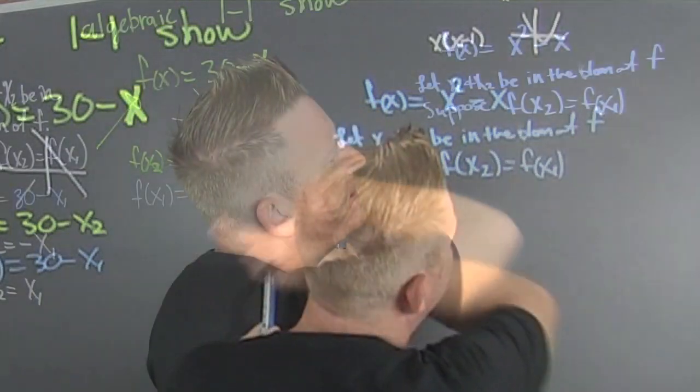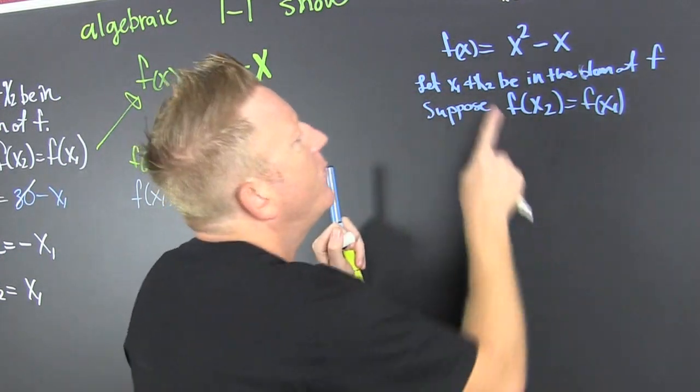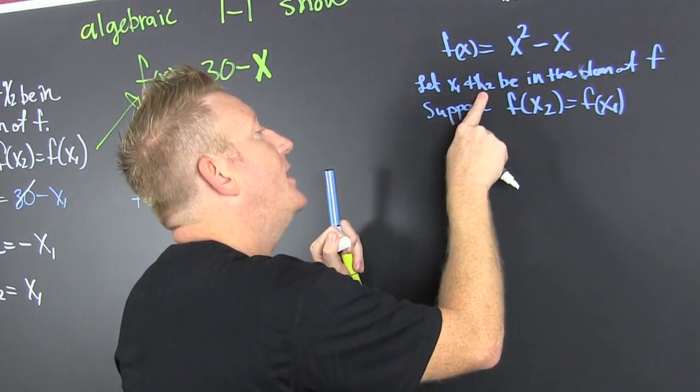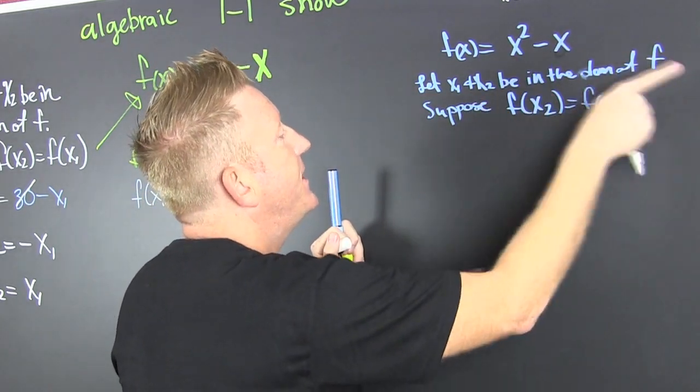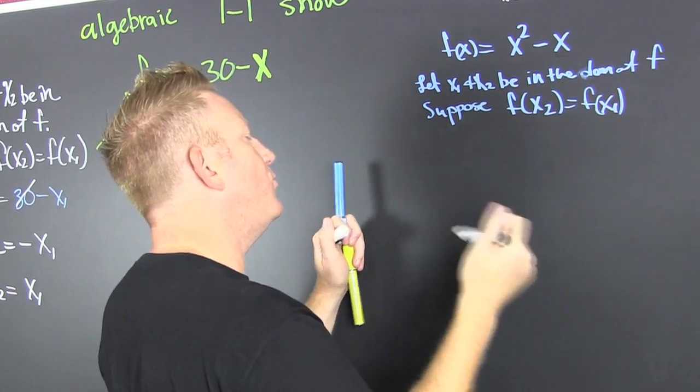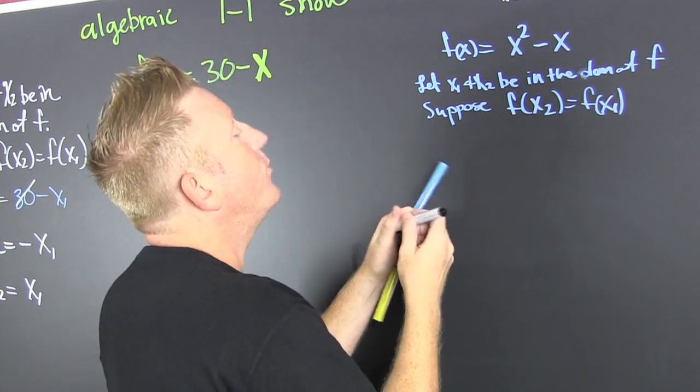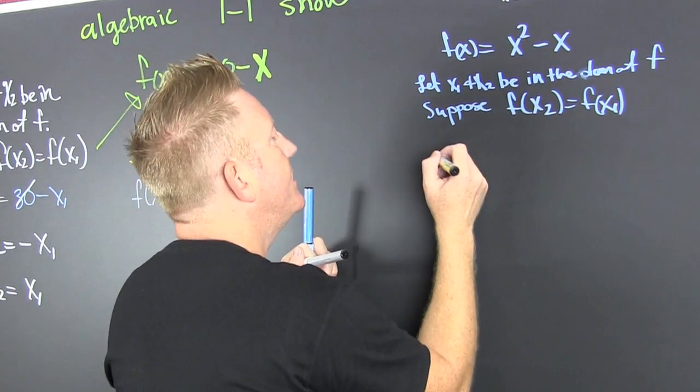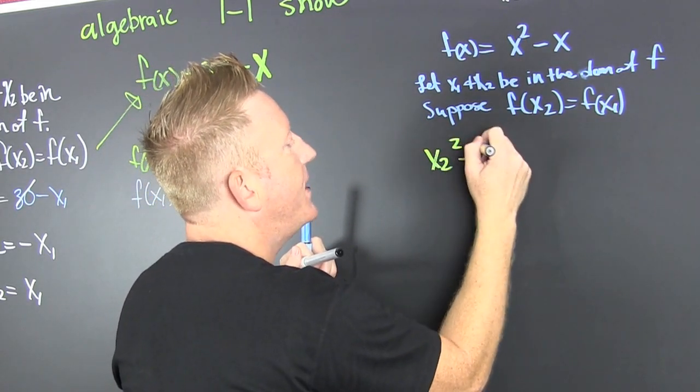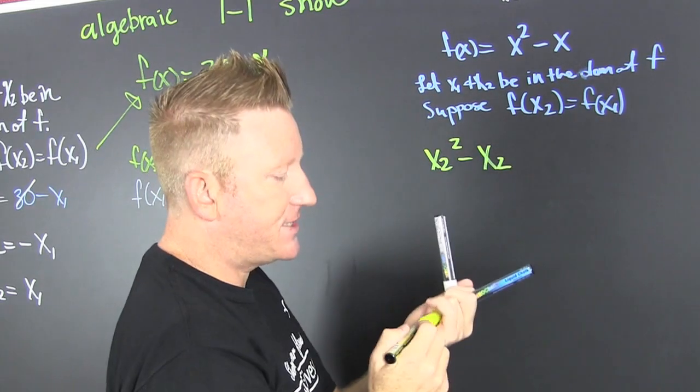So if we went and we did the same algebraic show, we would go and we'd let x1 and x2 be in the domain of f. There are x values in there. And then what? Suppose that the two y values are the same.